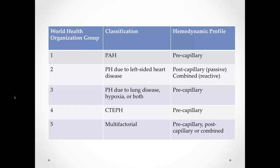In Type 2 pulmonary hypertension, you can have either a post-capillary hemodynamic profile, which is typically what you think of when you think of PH due to left-sided heart disease. But as this process becomes more chronic — one proposed mechanism being chronic hypoxia and vasoconstriction — over time you have an increase in vasoreactivity in the pulmonary vascular bed, and you do actually see a combined hemodynamic profile in Type 2 PH.